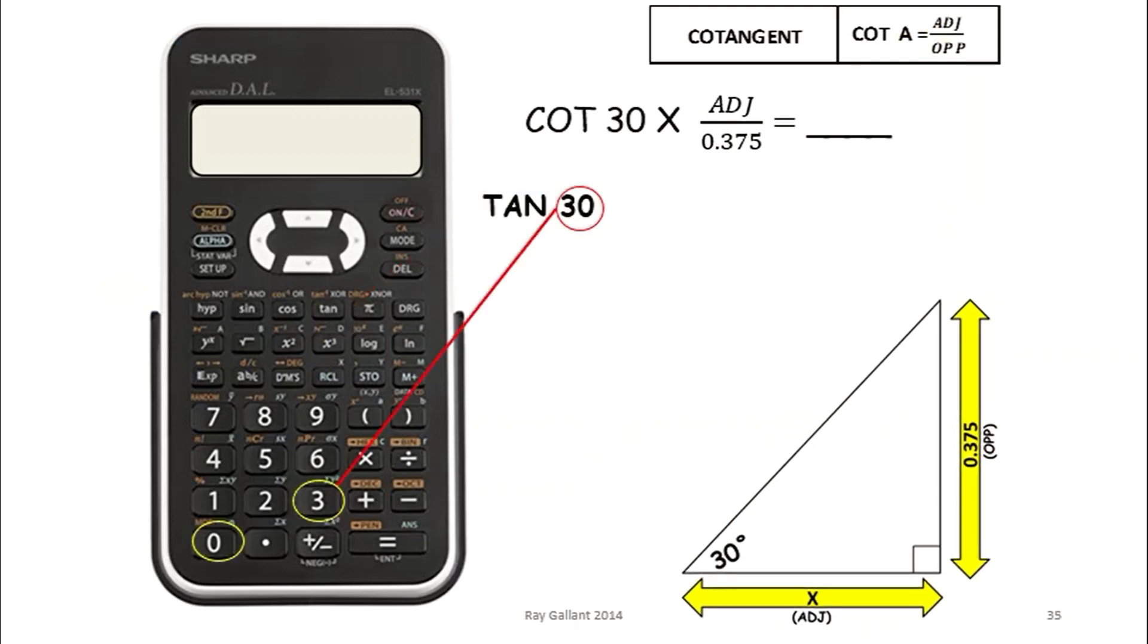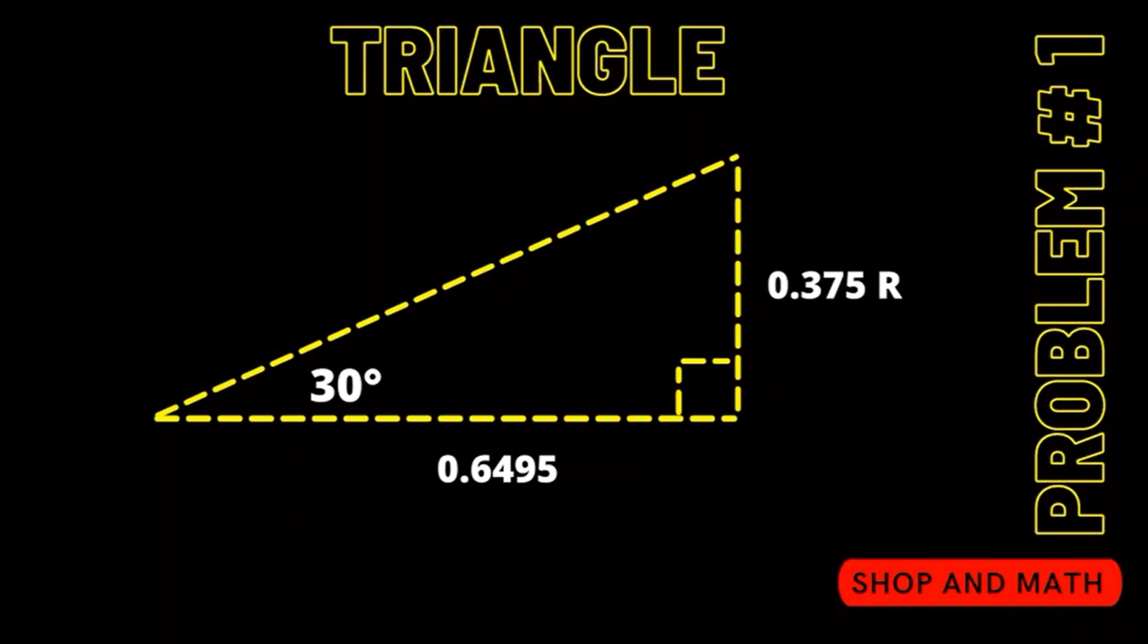So we're going to use cotangent 30 equals second function 1 over equals times 0.375 equals 0.6495. Therefore the length or the answer for our length is 0.6495.